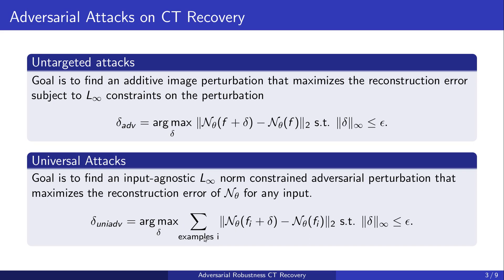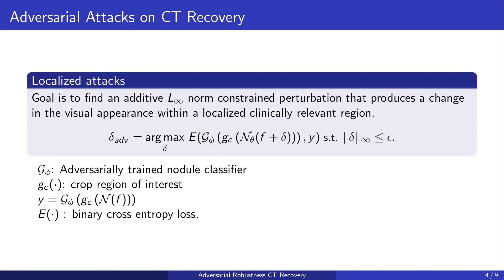We further evaluate the robustness to localized attacks, which seek to change the appearance in a local clinically relevant region. Our localized attack utilizes an adversarially trained classifier trained on chest CT nodules to guide the attack towards a plausible change in visual appearance in GC — the localized region of interest — by modifying the malignancy predicted by the robust classifier. Using a non-robust classifier in the attack can cause misclassifications even without perceptible changes in reconstructions, and hence needs to be avoided.